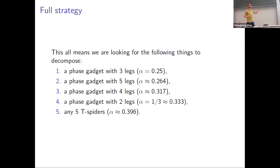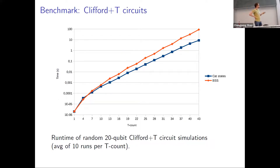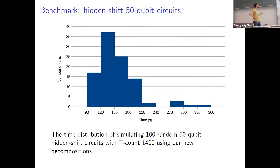Not all decompositions are created equally — we look for certain ones first. We improved our algorithm with this approach and benchmarked it. On 20-qubit circuits, even at T-count 43, we already see an order-of-magnitude improvement in runtime compared to the previous approach. This runs on a laptop. For the 50-qubit hidden shift circuits — all T-count 1400 circuits — we simulate them in at most six minutes on a laptop. Most finish within five minutes. These are really large circuits and it works surprisingly well.